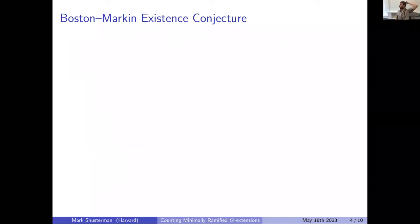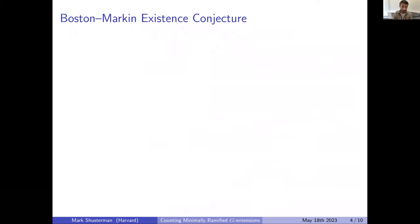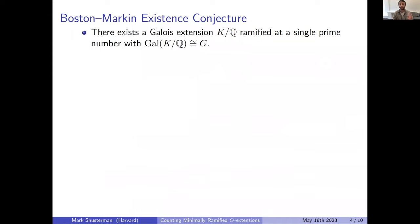Because this conjecture is pretty difficult, it makes sense to also ask about existence — even if we're not trying to count. This is a quantitative conjecture, but you might also ask a qualitative form: perhaps there are infinitely many such extensions, or even that such an extension exists in the first place. Even that seems to be a non-obvious thing.